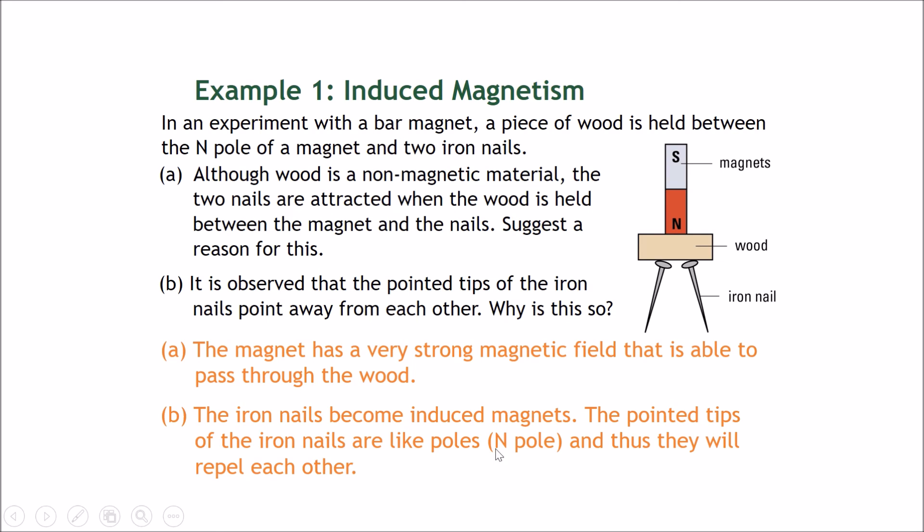The pointed tips of the iron nails are like poles—north poles—and therefore they will repel each other. Let's take a look at why these two points are north poles. This part here is a north pole, which means it will induce the heads of the nails to become south poles.